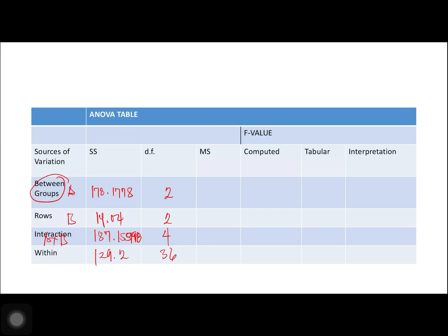For mean squares, we divide sum of squares by degrees of freedom. MSA = 178.1778 / 2 = 89.09. MSB = 14.04 / 2 = 7.02. MS AxB = 187.16 / 4 = 46.79. MS within = 129.2 / 36 = 3.59.